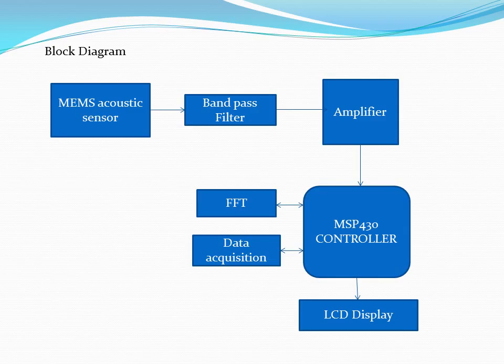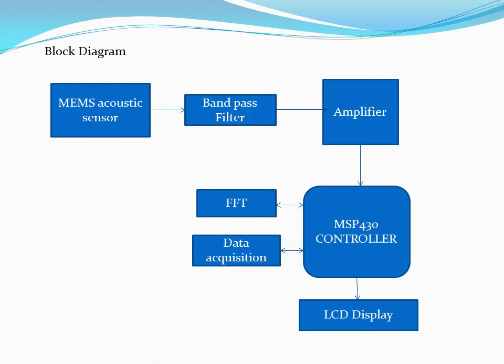The sensor sends signals to a bandpass filter where they are filtered for accurate output, and then to the amplifier, which increases the strength of the signal. The amplified signals are then sent to the microcontroller of the MSP430 family from Texas Instruments. The microcontroller performs the FFT of the signals from the MEMS acoustic sensor, and the FFT values are compared against predetermined values shown in the data acquisition block. Results are then displayed on the LCD.